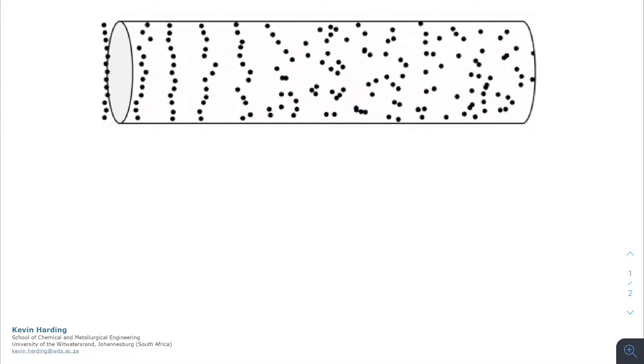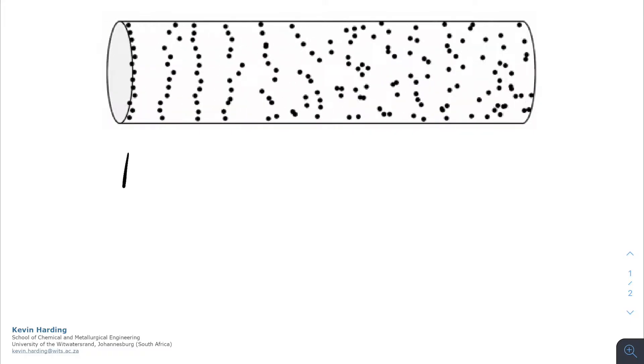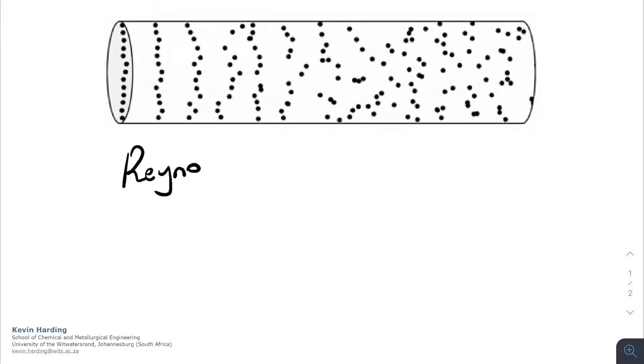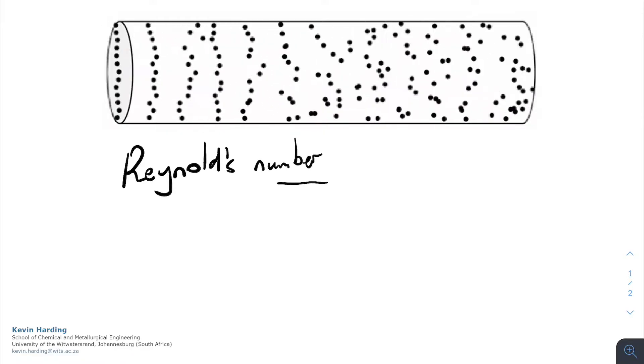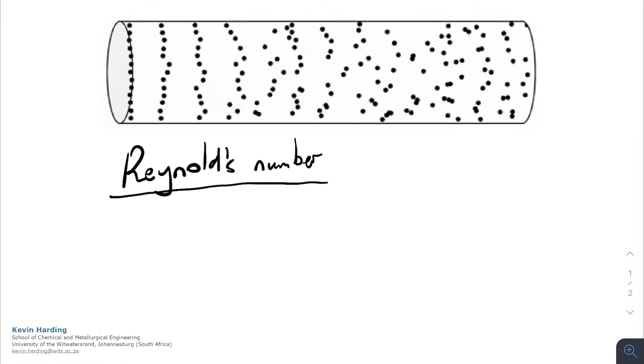In order to determine whether a fluid is laminar or turbulent, we are going to introduce the term Reynolds number, which is going to indicate to us how turbulent the flow in a pipe may be.